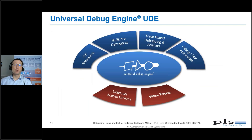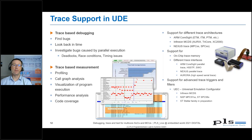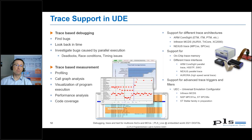UDE offers a whole range of powerful functions for devices that provide trace support. UDE can be used for trace-based debugging — for example, if the target is not allowed to be stopped and debugging has to be done non-intrusively, without changing the runtime behavior of the application. UDE can also perform trace-based measurement and runtime analysis, offering functions like profiling, core graphs, code coverage, and visualization of the program flow over time. All common trace systems are supported, such as ARM CoreSight, MCDS from Infineon, and Nexus Trace found on power architecture devices from ST or NXP.